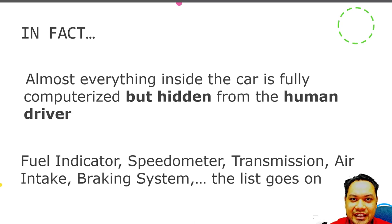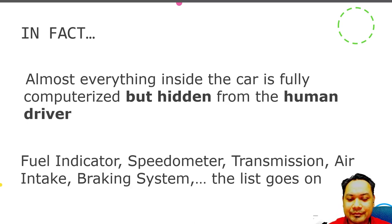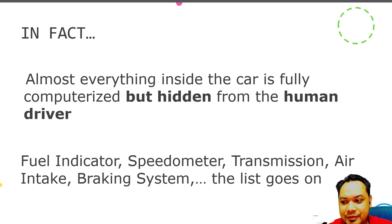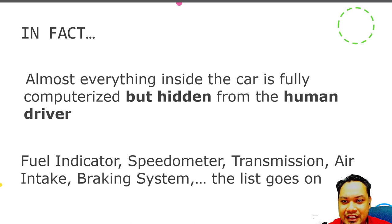Everyday drivers are not realizing that they are using a computer. The fuel indicator, which shows how much fuel remains, is in fact computerized. And the speedometer, which looks like an analog meter, is actually controlled by a digital computer — the analog appearance is by design. When you press the accelerator and the car moves faster, the computer sends a signal to the needle to raise to the appropriate speed, such as 40 kilometers per hour.